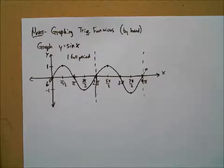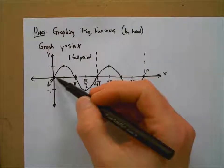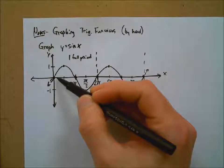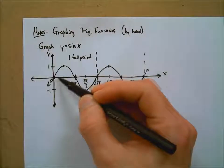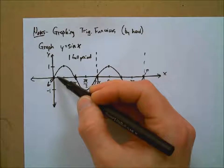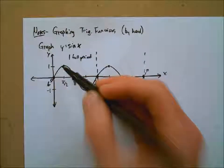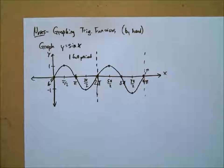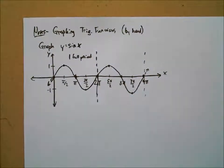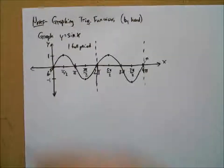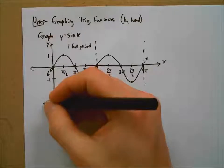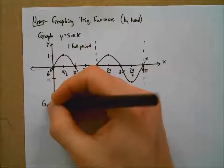If you really wanted to, you could even get down to the nitty-gritty — we could have done pi over 6, pi over 4, pi over 3, and you would have gotten that little curve there too. But we're not going to do that; it's more than we need to worry about.